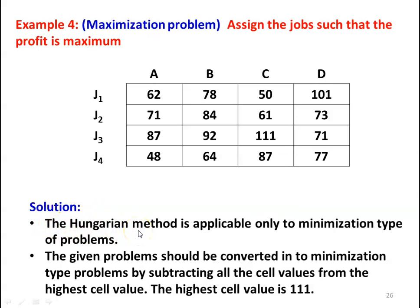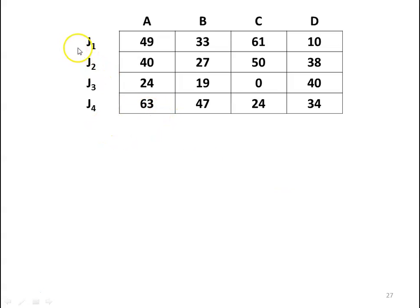The Hungarian method is applicable only to minimization type problems. So the given problem must be converted to a minimization type by subtracting all cell values from the highest cell value. Among the 16 cell values, the highest is 111 at J3C. Subtracting all values from 111, the new table becomes: 49, 40, 24, 63; 33, 27, 19, 47; 61, 50, 0, 24; 10, 38, 40, 34.